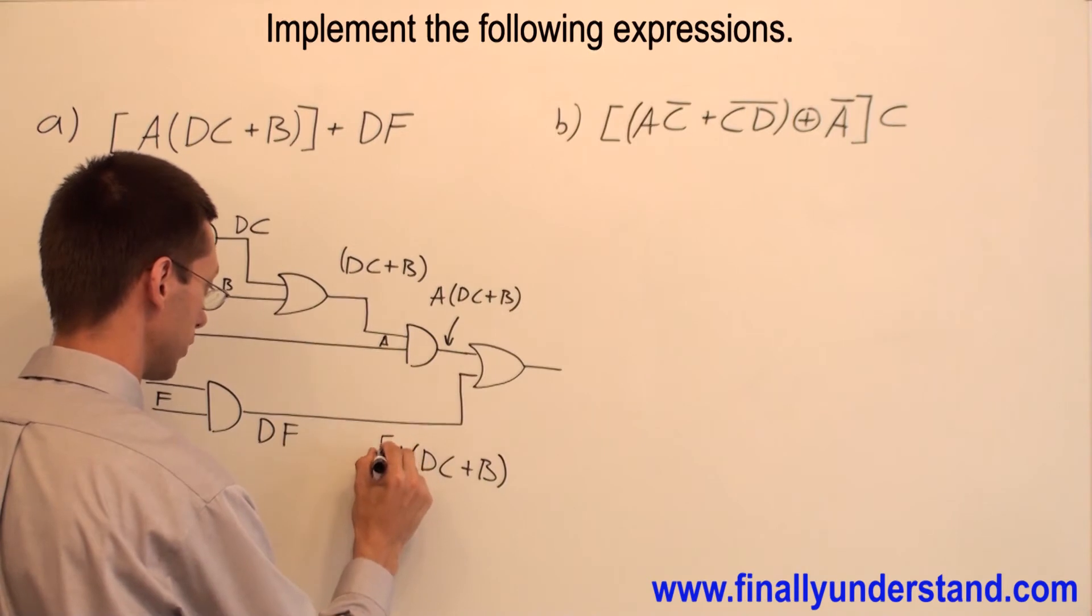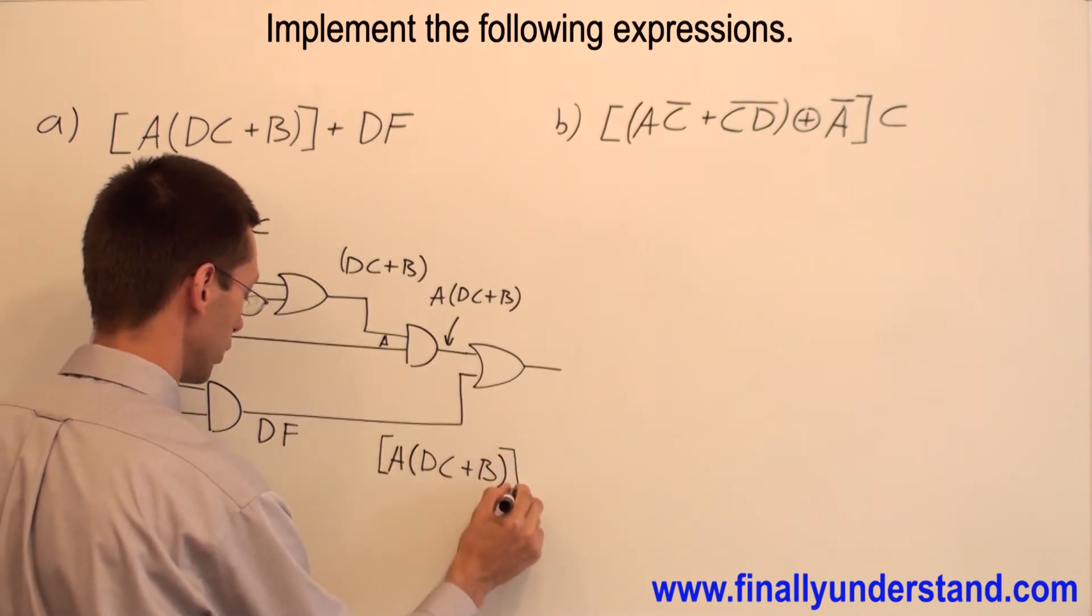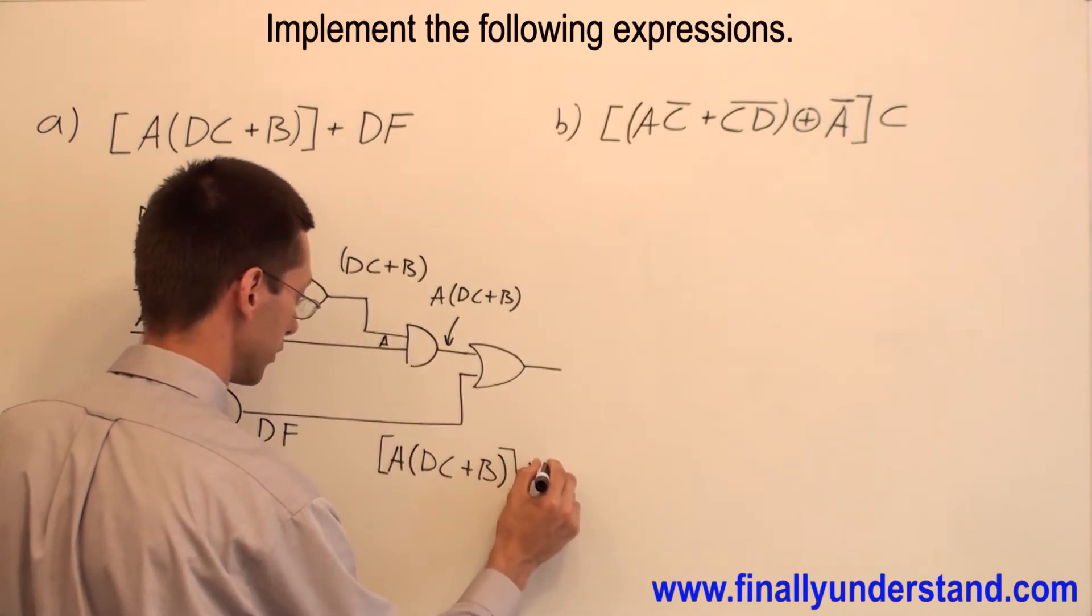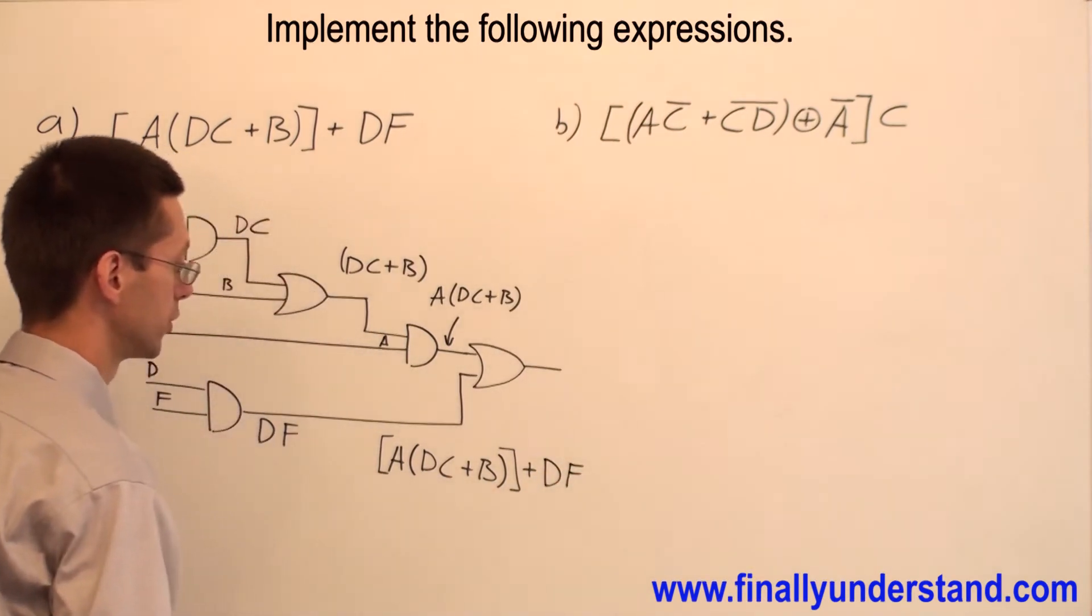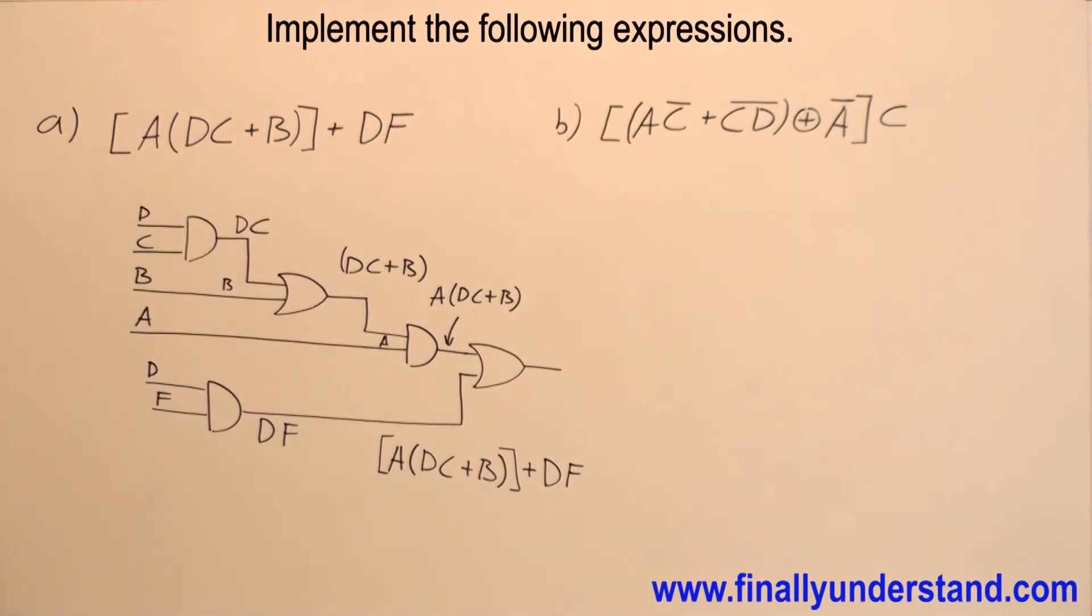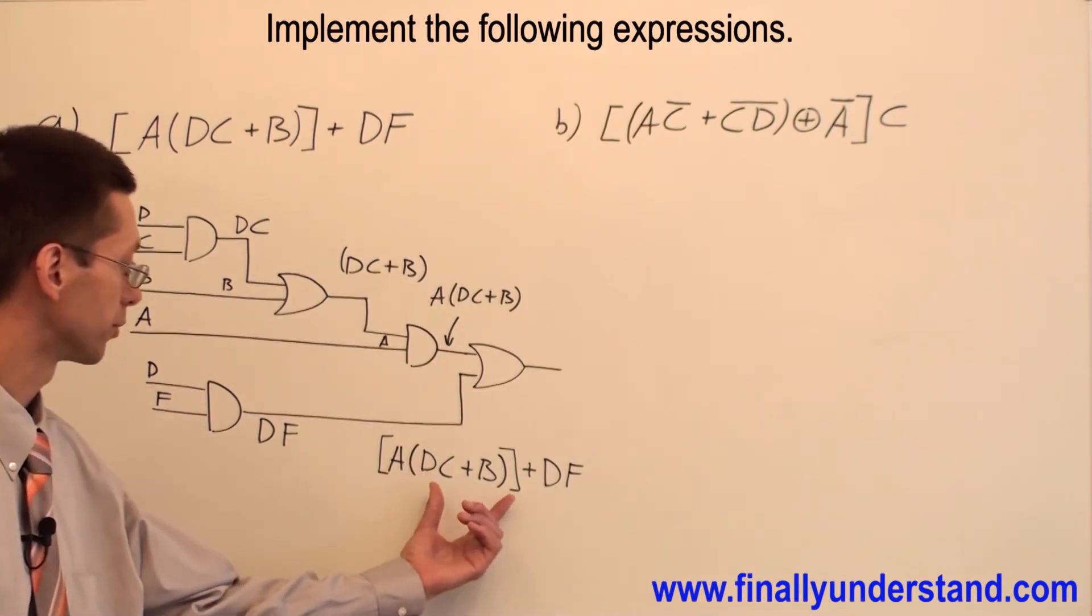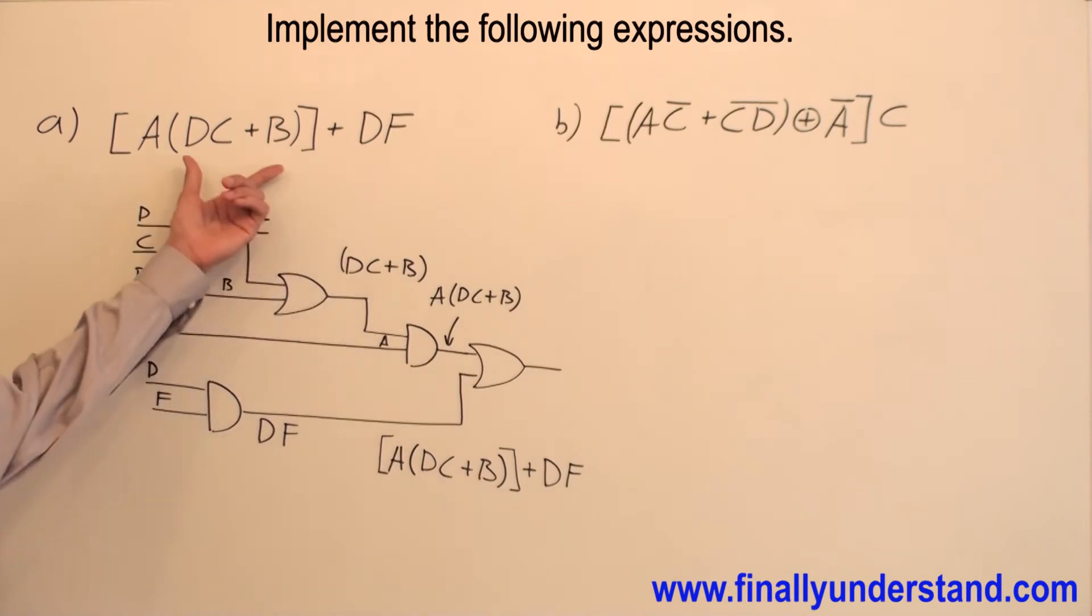Or everything is going to be ORed with DF. This is the solution for part A. As you can see, whatever I have obtained is exactly the same as whatever I had at the beginning.